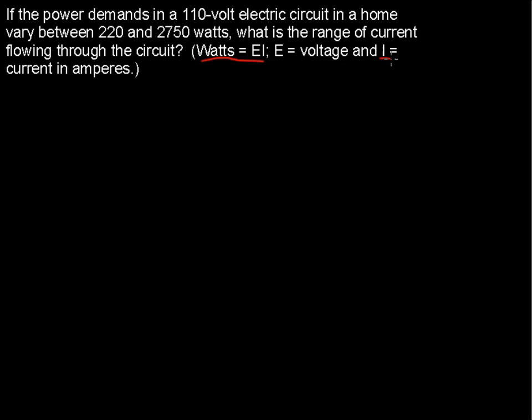So we have our variable defined for us because that is what it's asking for. What is the range of current? And so we define our unknown based on what is being asked, and it's given to us: I.